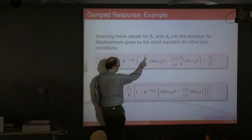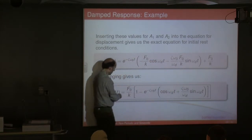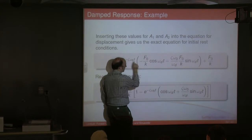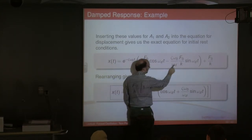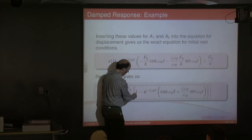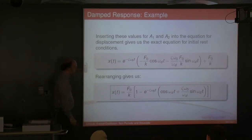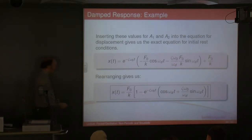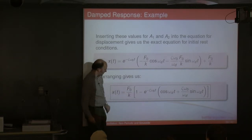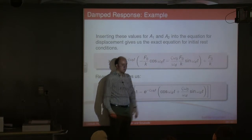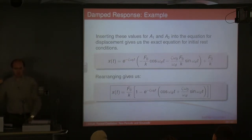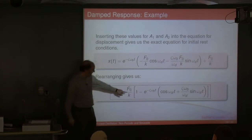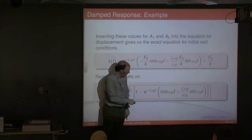So when we had the undamped case, A2 came out to be zero; in the damped case, A2 is not zero. Inserting those into the general solution and simplifying, there's an F₀/k in each term so it factors out. We end up with one term being an exponential times cosine, another exponential times sine, and then the constant one — giving us a constant forcing term minus a decaying sinusoid.